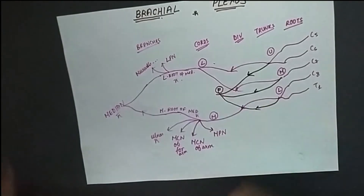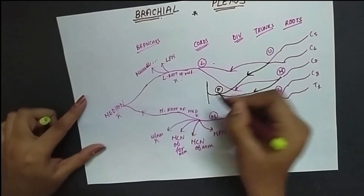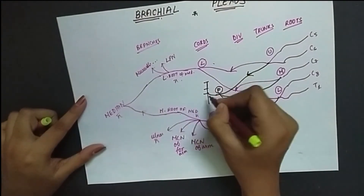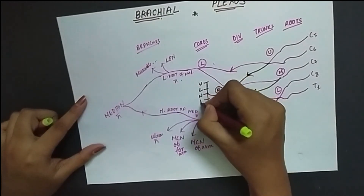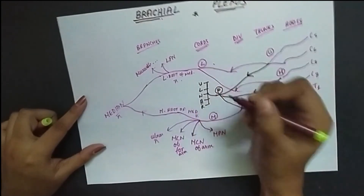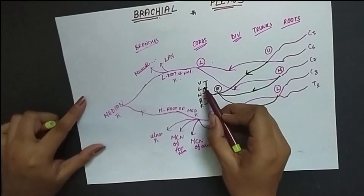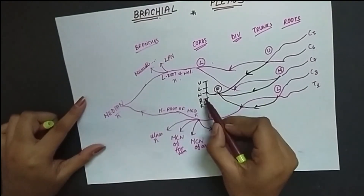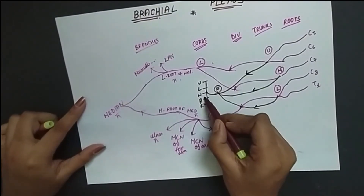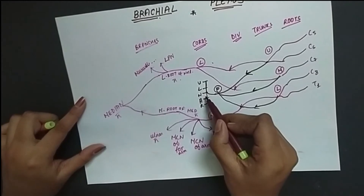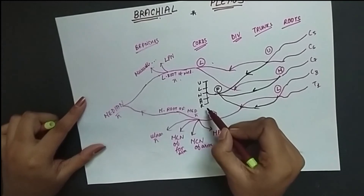Now the branches of the posterior cord. There is a simple mnemonic: U-L-N-A-R. U stands for the upper subscapular nerve, L for the lower subscapular nerve, N for the nerve to latissimus dorsi or thoracodorsal nerve, A for the axillary nerve, and R for the radial nerve.